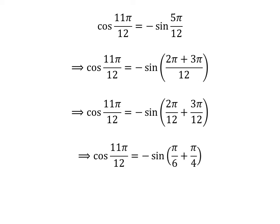So, cosine of 11 times pi upon 12 is equal to minus sine of pi upon 6 plus pi upon 4.